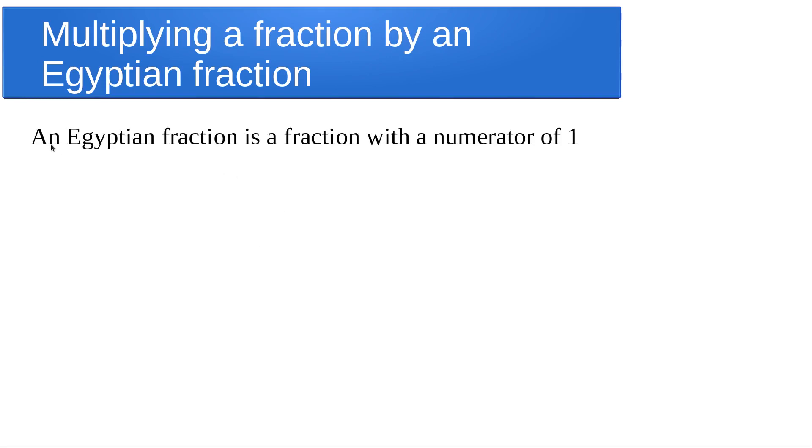So what's an Egyptian fraction? An Egyptian fraction is a fraction which has a numerator of one, so that means there's always a one on top. It's just the denominator that can have different values.